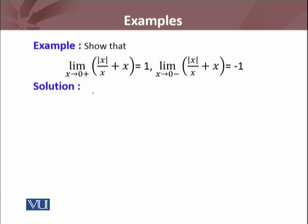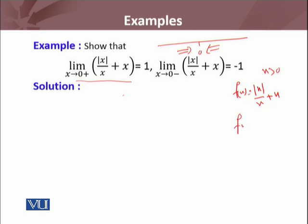Now we have another example in which we have to show that if we approach from the right side, the function f(x) = |x|/x + x — from the right side gives limit 1, and from the left side gives limit −1. First, for x > 0, |x| = x, so the function becomes x/x + x = 1 + x. This example we discussed before, but not formally.